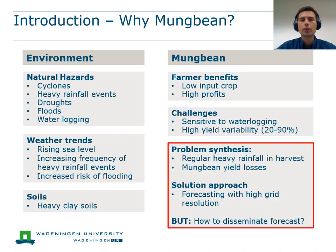To conclude, the problems are the regular heavy rainfall and the consequent waterlogging during mung bean harvest, potentially leading to substantial yield losses. The broader project objective is thus to improve the weather forecasting system at a level relevant to farmers to protect their crops. However, the question remains on how to disseminate the information from the information provider to mung bean farmers.